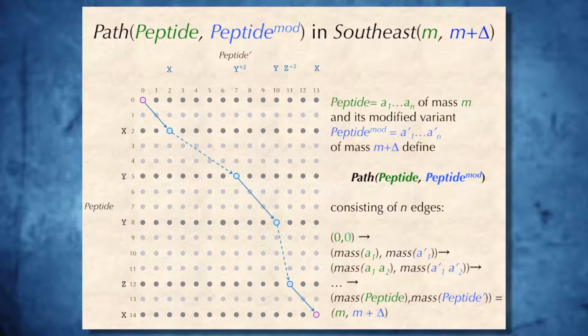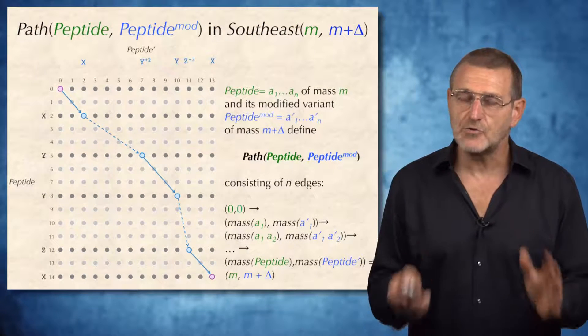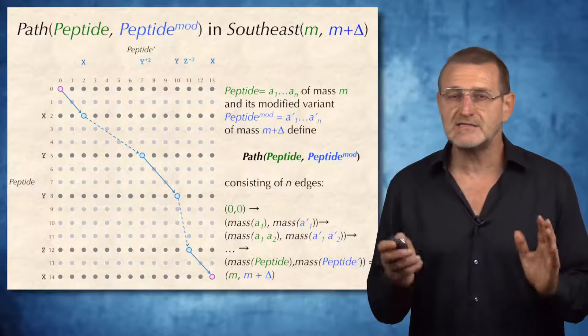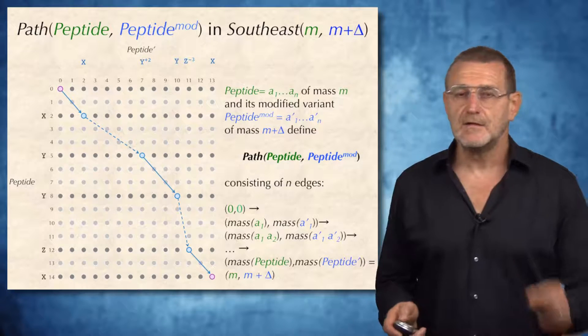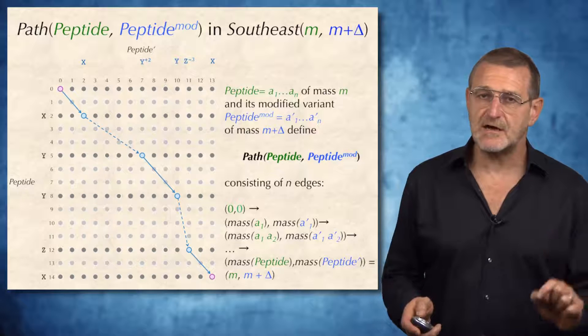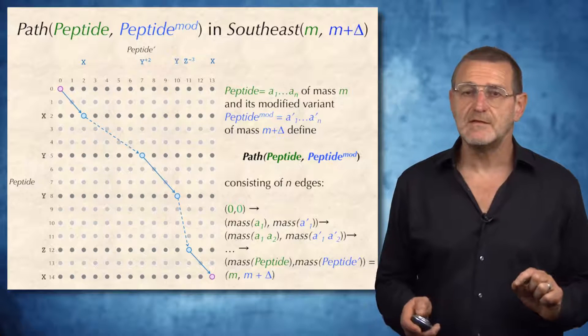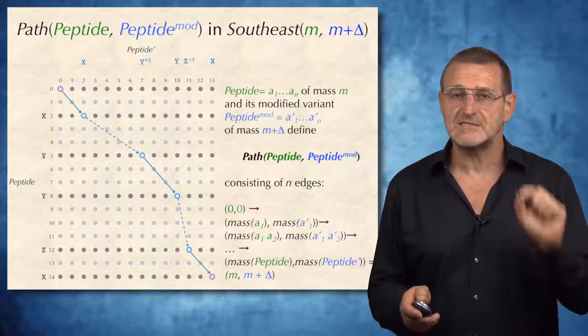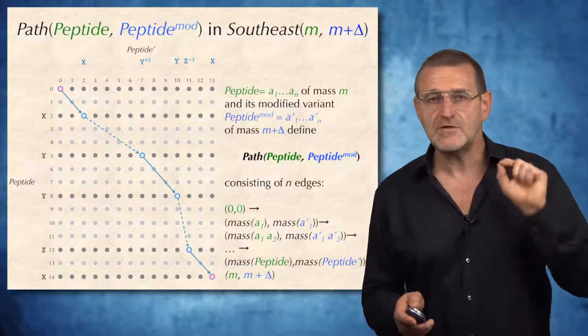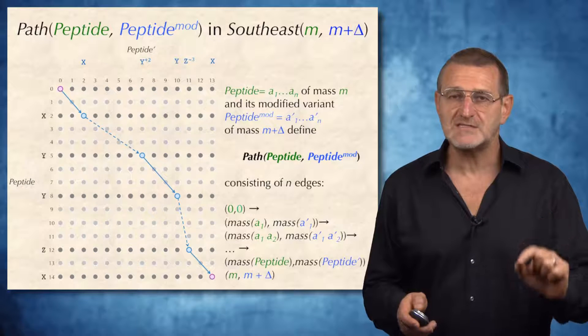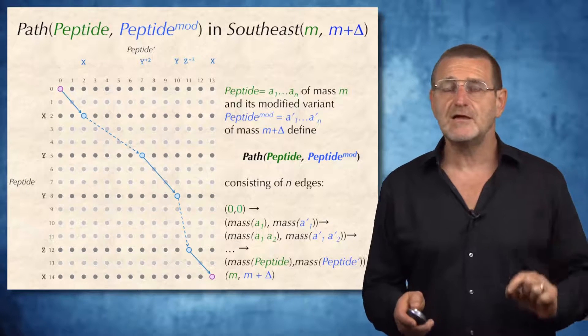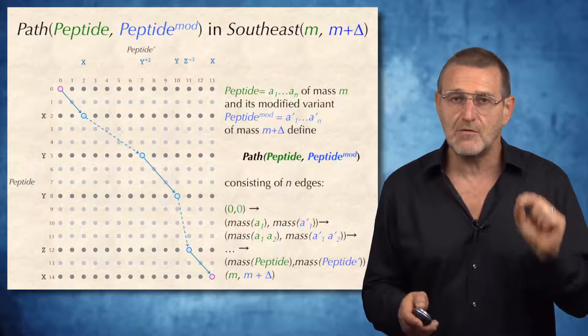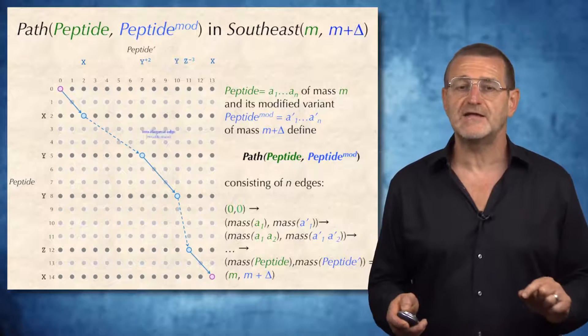So far, I failed to explain how to construct a path between an unmodified peptide, in green here, and its modified version shown in blue here. Let me do this now. So this path will start at the node, then move to the node with coordinates equal to the masses of prefixes of length 1 of this peptide, then move to the coordinates corresponding to masses of prefixes of length 2, and finally move to the node with coordinates corresponding to the masses of entire unmodified and modified peptides.